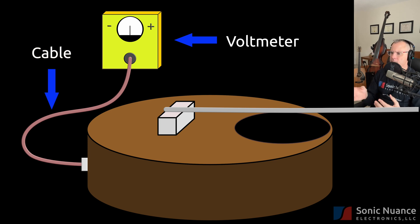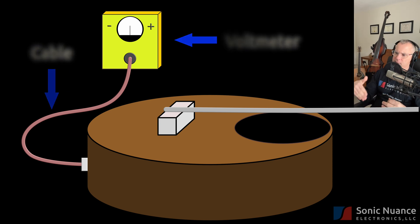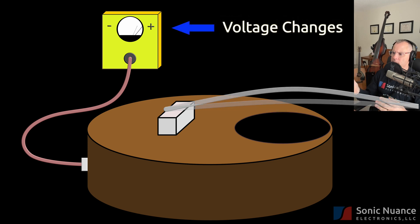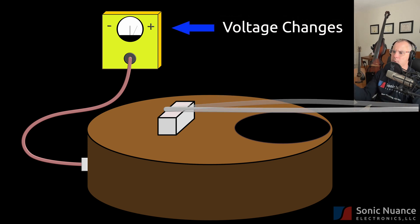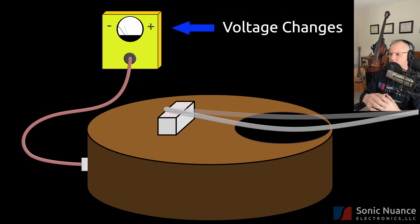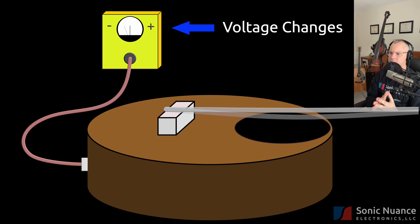Recall that the piezo pickup responds directly to vibrations. So, as the string starts vibrating, the piezo pickup responds by generating a voltage proportional to the vibrating string. As this animation continues, let's discuss some piezo pickup characteristics.